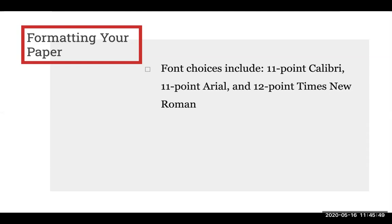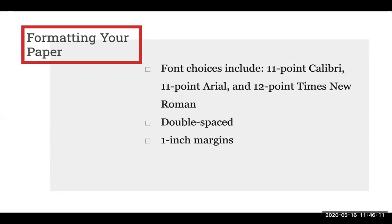Let's review a few more formatting requirements for your paper. You should use one of the APA style's recommended fonts, which include 11-point Calibri, 11-point Arial, or 12-point Times New Roman. Whichever one you choose, it's important to use the same one throughout your whole paper. Your paper should be double-spaced. Use one-inch margins on each side of your paper. And indent the first line of each new paragraph by using the tab key on the keyboard.